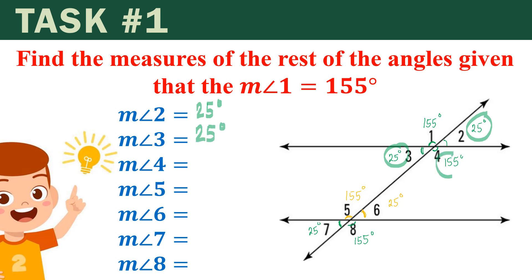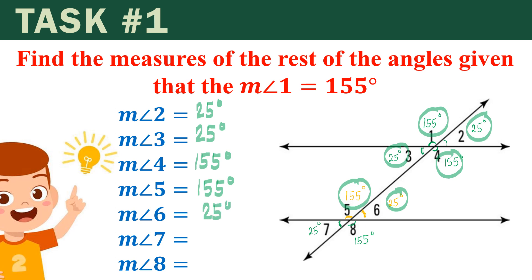For angle 4, we have 155 degrees. For angle 5, we have 155 degrees. For angle 6, we have 25 degrees. For angle 7, we have 25 degrees. And lastly, for angle 8, we have 155 degrees. So that means we are done with task number 1.